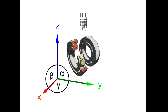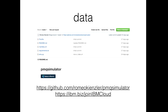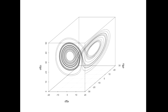Since real bearing failure data is hard to obtain, I've written a test data generator using the Lorenz attractor model. The Lorenz attractor is a physical model — Lorenz was the inventor of chaos theory — and I will show you how to write a neural network capable of detecting anomalies in a chaotic system.